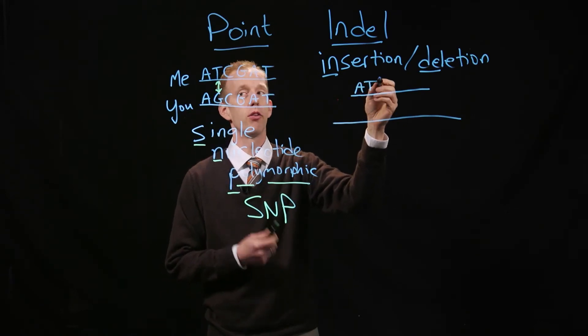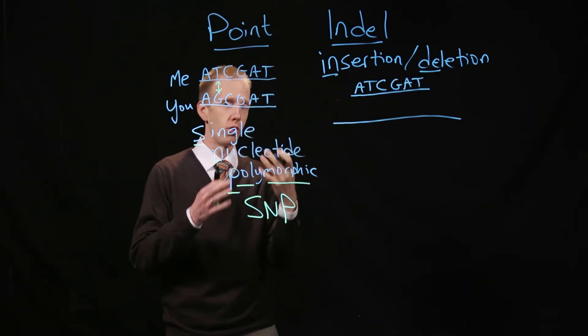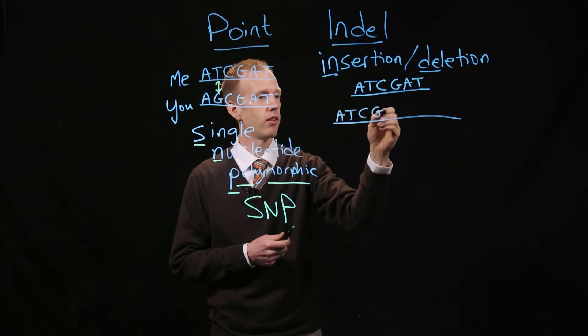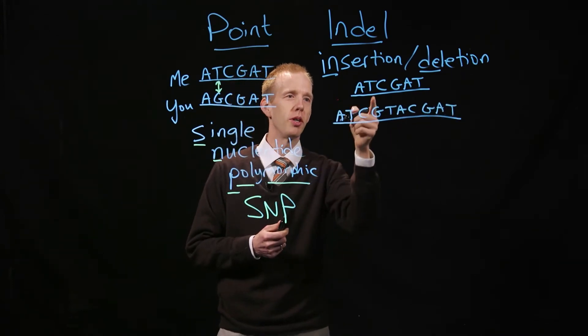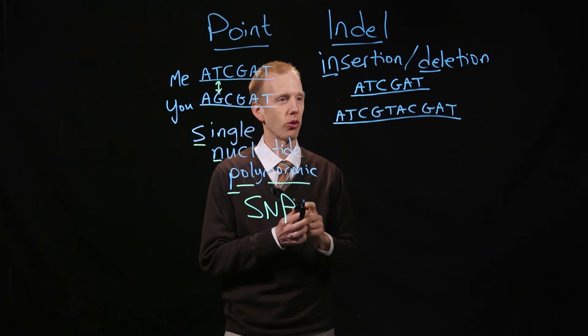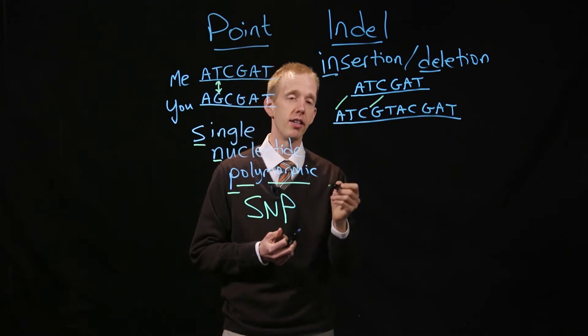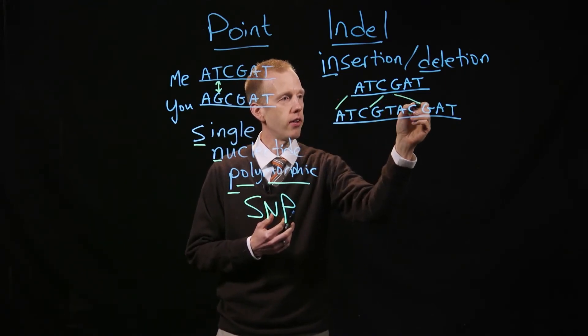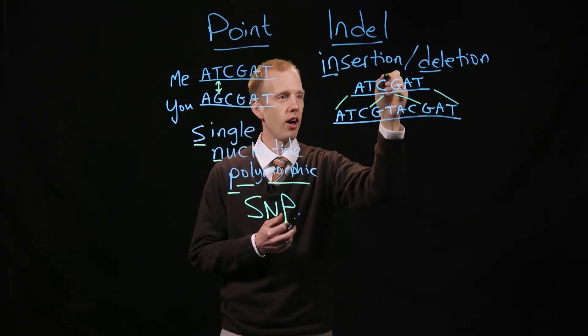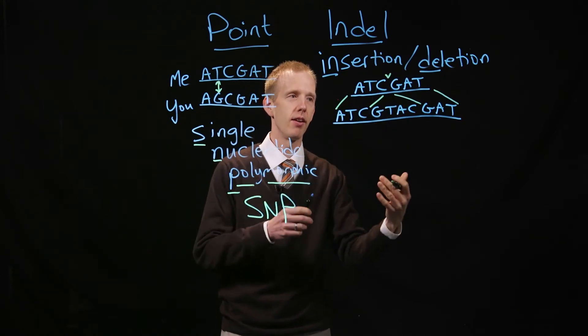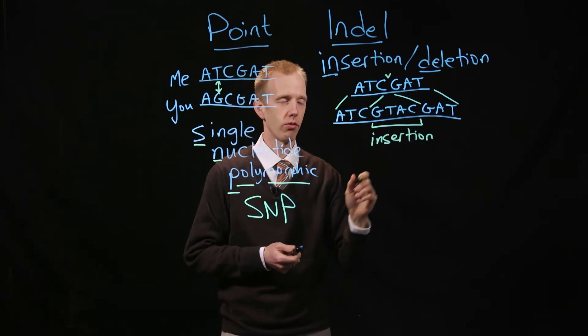So using the same example, my version of this chromosome might read ATCGAT as it did before, but your chromosome might have some extra nucleotides. Can you spot the difference between my chromosome and your hypothetical chromosome? It looks like there's a common set of nucleotides there, ATC, that we both share, and the same is true for those three nucleotides on the other end of the chromosome. So where we differ is, I have no nucleotides in between the ATC and the GAT, where there's an insertion of four nucleotides on the second chromosome.